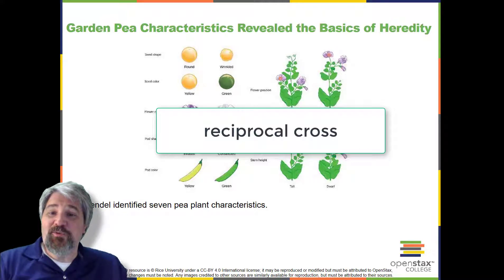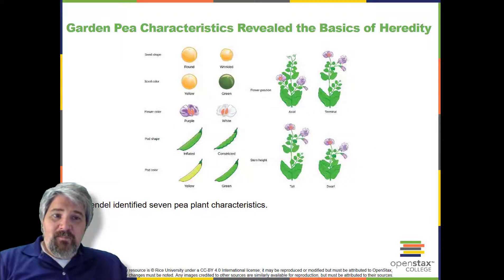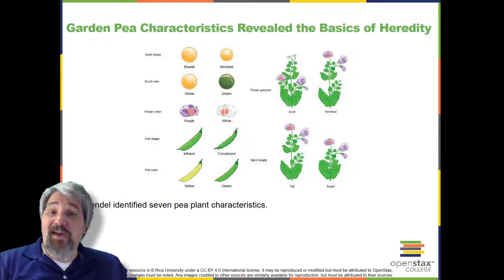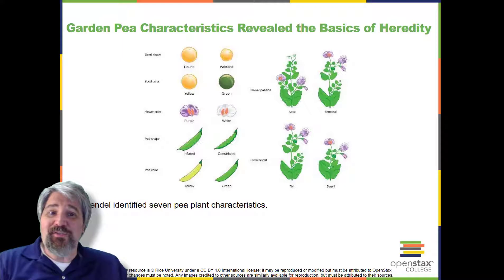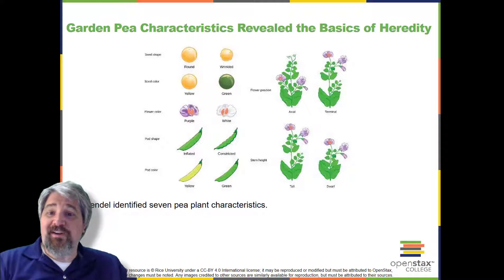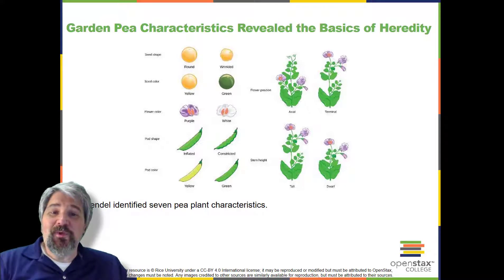For the other six characteristics that Mendel examined, the F1 and F2 generations behaved in the same way as they did for flower color. One of the two traits would disappear completely from the F1 generation, only to reappear in the F2 generation at a ratio of roughly 3 to 1. Upon compiling his results for many thousands of plants, Mendel concluded that the characteristics could be divided into expressed and latent traits. He called these dominant and recessive traits, respectively. Dominant traits are those that are inherited unchanged in a hybridization. Recessive traits become latent or disappear in the offspring of a hybridization, but reappear in the progeny of the hybrid offspring.